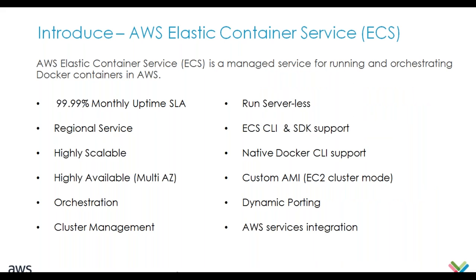Amazon ECS is a simple service for running Docker containers. If you have containers running in your enterprise and you'd like to move them to the cloud, ECS is the service for that. It provides running containers as standalone containers or you can use ECS service for orchestration. AWS provides 99.99% uptime SLA. It is highly scalable and available, provides orchestration and cluster management, and you can also run AWS ECS in a serverless fashion.